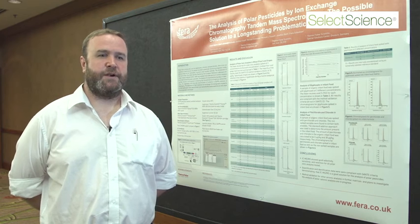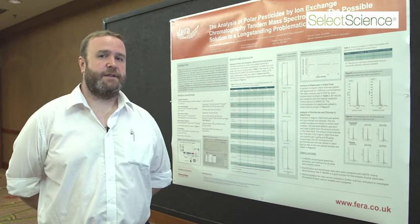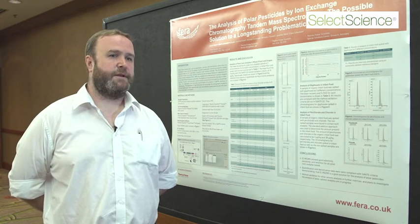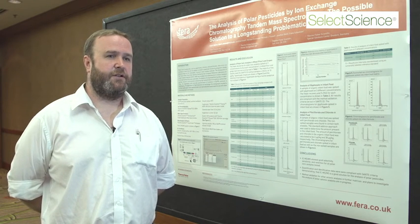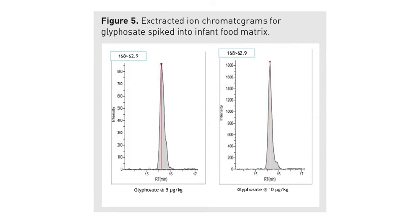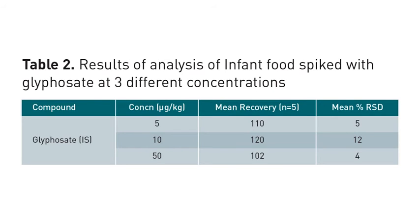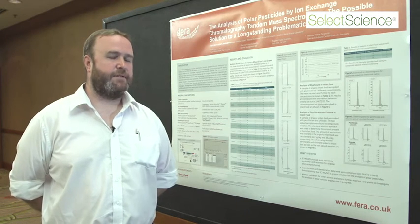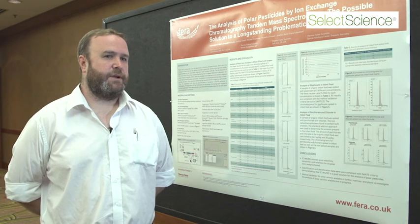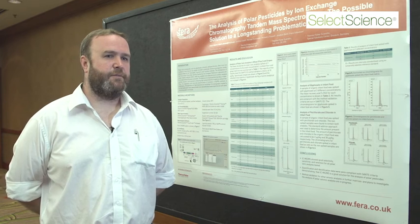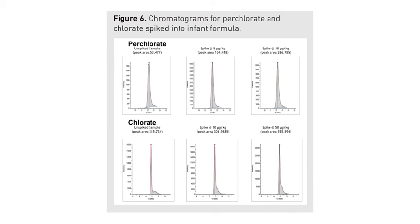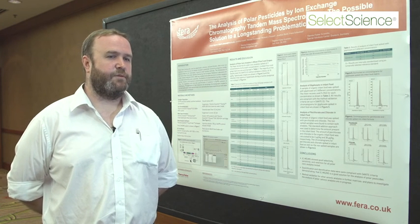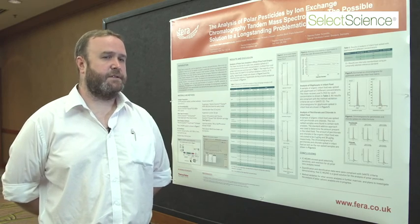We've also used the QWP extraction method for the extraction of glyphosate in infant food, validating at levels of 5, 10, and 50 micrograms per kilogram, with the MRL set at 10 micrograms per kilogram. We're getting good recoveries and good relative standard deviations, passing the Sante criteria for method performance. Figure five shows the type of response we're getting for glyphosate in infant food. During this validation, we were also looking at chlorate and perchlorate; this was an organic baby food, so we weren't expecting pesticides — and indeed found no glyphosate — but we did find chlorate at 38 micrograms per kilogram and perchlorate at 2 micrograms per kilogram. Figure six shows the relative responses of the sample compared to internal standard responses, demonstrating the method's ability to detect these residues in baby foods.